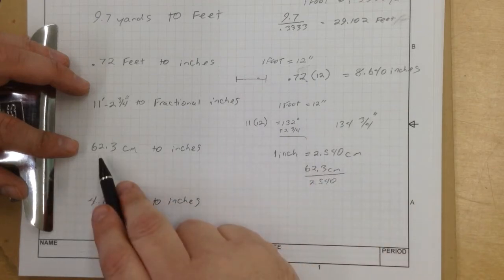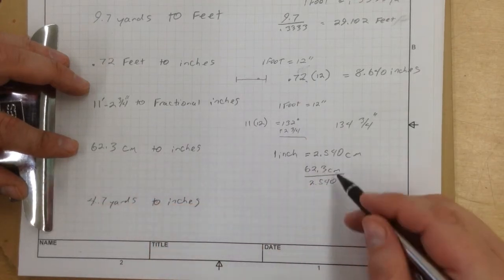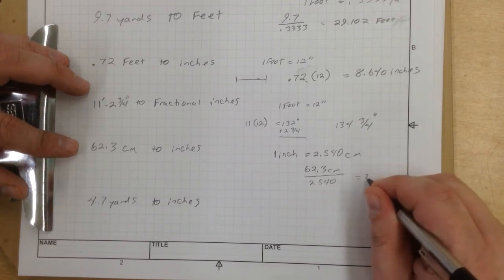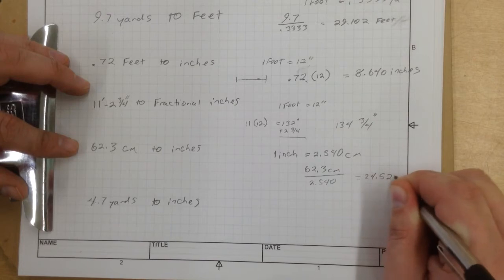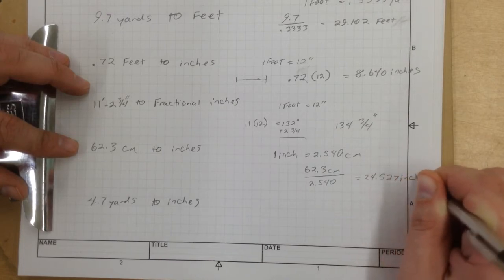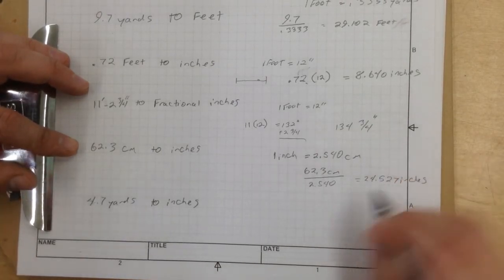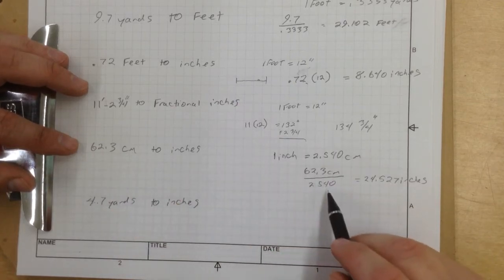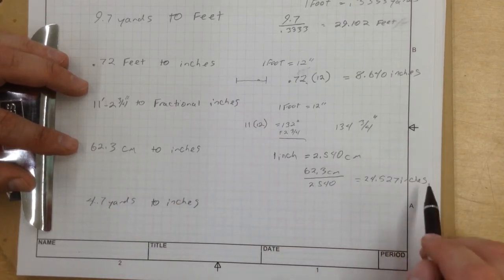Okay, that's our equivalent. So if we need to figure this out, 62.3 centimeters to inches, numerator, denominator, and that is going to give us 24.527 inches. Okay, so we got 62.3, numerator, denominator, 24.527 inches.